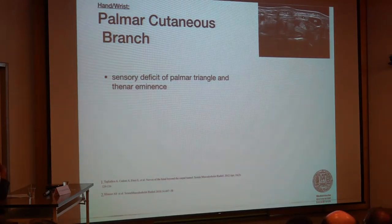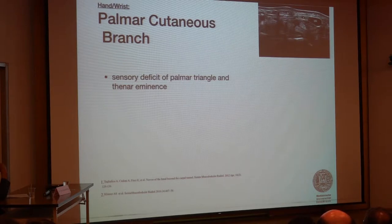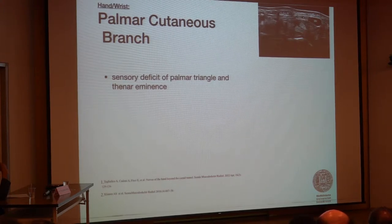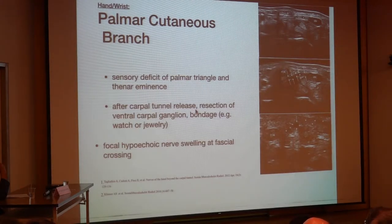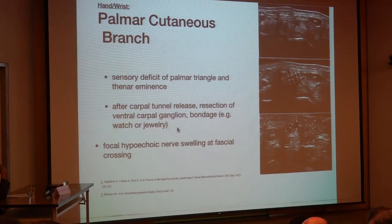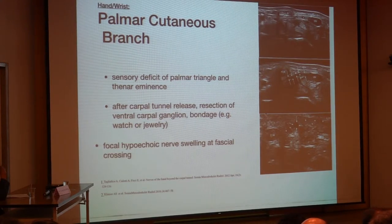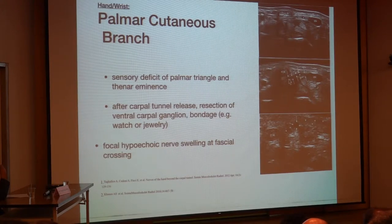At the wrist, there may also be affection of the palmar cutaneous branch, showing a sensory deficit of the palmar triangle of the thenar eminence. The palmar cutaneous branch is always located close to the flexor carpi radialis tendon, but is very variable in its origin. It may be affected after carpal tunnel release, after resection of a volar ganglion, or due to external compression from heavy watches or jewelry. By sonography, we can see a focal hypoechoic nerve swelling at the fascial crossing, and the enlarged hypoechoic thickening close to the flexor carpi radialis tendon.